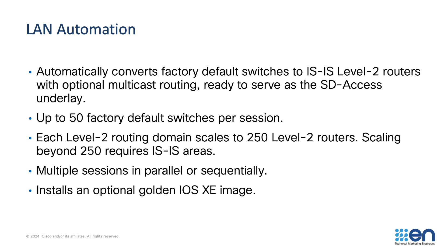LAN automation discovers and onboards factory default switches in what we call a LAN automation session, and in each session up to 50 factory default switches can be onboarded. If you have more than 50, you'd run multiple sessions — session 1 might discover the first 50, session 2 the second 50, and so on. It's important to note that a level 2 IS-IS routing domain should not scale beyond 250 level 2 routers, or 250 Catalyst 9000 switches. Going beyond 250 will require IS-IS areas, which are out of scope for today but can be covered in a future video.